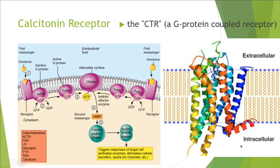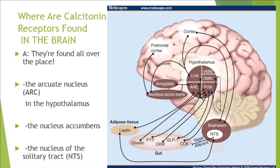The calcitonin receptor is called the CTR, and here's its structure. Here's a diagram showing the basic transduction pathway — for calcitonin specifically, the receptor is the CTR and the G proteins are GS and GQ. Calcitonin raises the amount of cyclic AMP in bone-reabsorbing osteoclasts. CTR is found not only in kidney cells and osteoclasts, but also in the brain — highly concentrated in the nucleus accumbens, the arcuate nucleus, and the nucleus of the solitary tract.